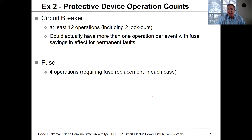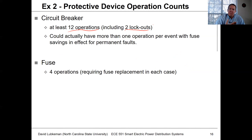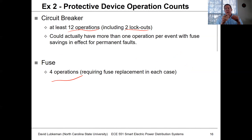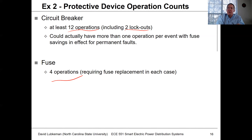Looking at protection device operation counts from the table, the circuit breaker will operate at least 12 times — including two lockouts — and may operate more because clearing temporary events requires two or three shots. The fuse will operate four times, requiring a crew to replace it each time. As Mr. Guida noted, there's a replaceable fuse link in the cutouts: the crew uses a hot stick to remove the blown fuse link, replaces it, and pushes it back into the cutout.